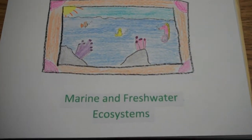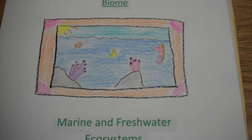Sponges live in marine and freshwater ecosystems. Marine is saltwater and freshwater is freshwater.